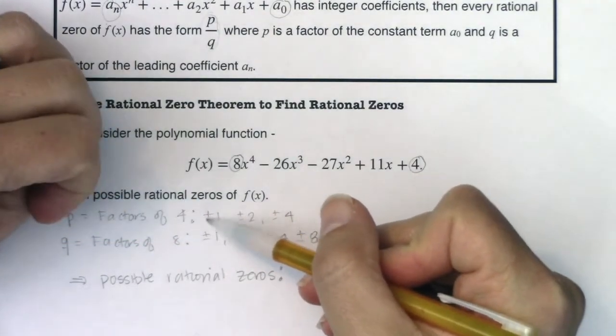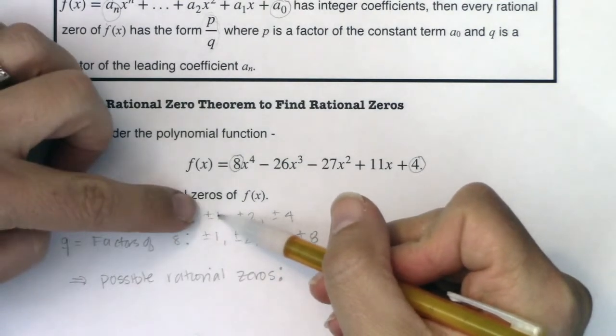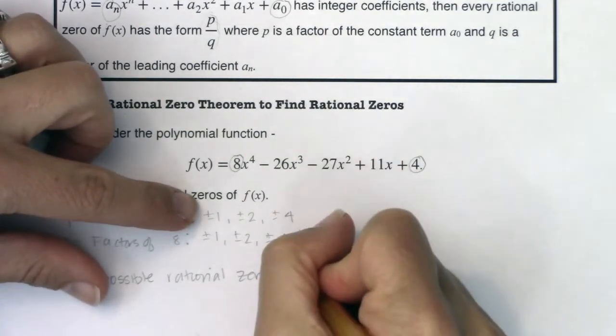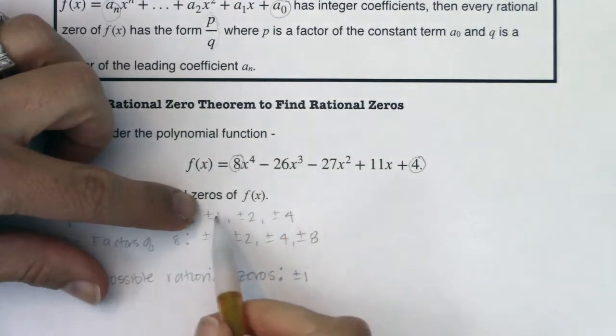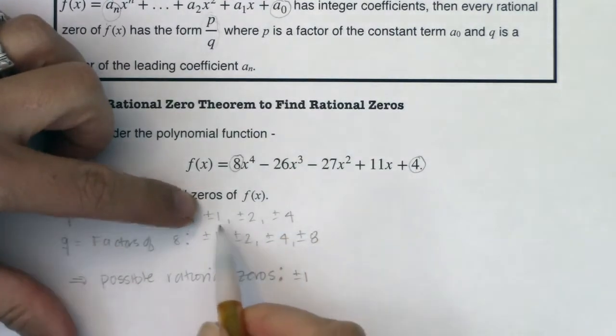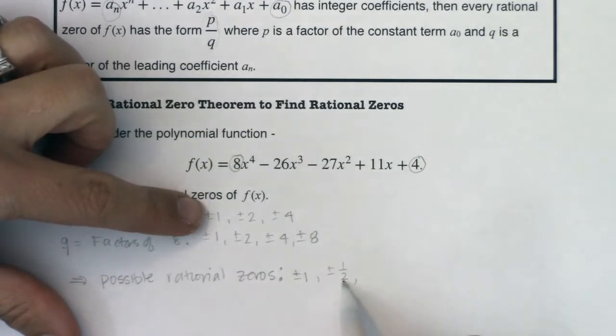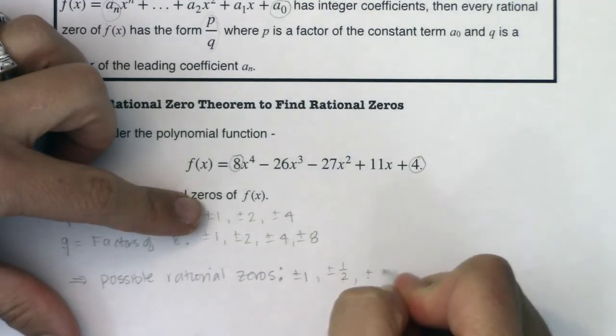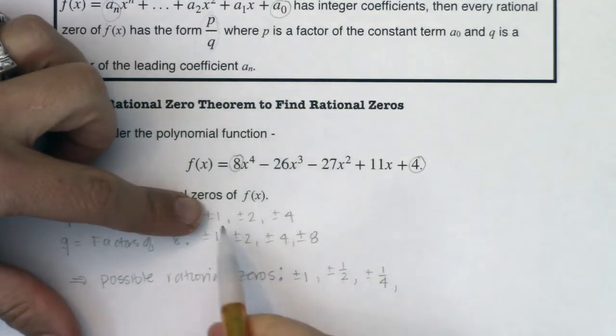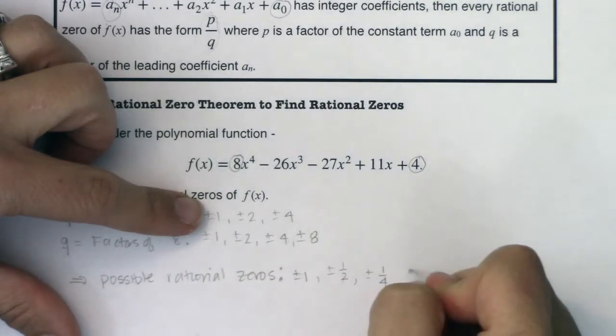So I'm going to start with a p value of plus or minus 1. So 1 divided by 1 is 1. So I will put that into my list. 1 divided by 2. Right. This p over this q is 1 half. All right. That's a rational number. It's a fraction ratio. I've got 1 divided by 4. So plus or minus 1 fourth. I've got 1 divided by 8. So plus or minus 1 eighth. And I'm not done.